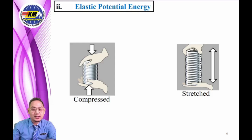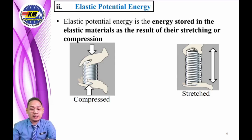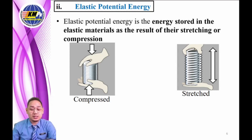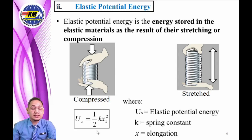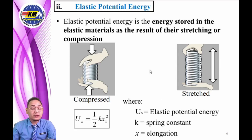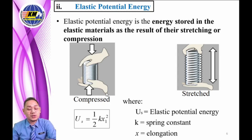Elastic potential energy is the energy stored in elastic material as the result of their stretching or compression. The amount of elastic potential energy stored is related to the amount of stretch — the more the stretch, the more stored energy. This gives the formula: U_s = ½kx², where k is the spring constant and x is the elongation. From the figure, you can see that elastic potential energy is gained from both stretching and compression.